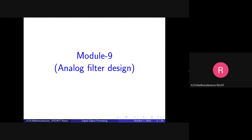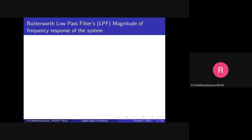Good morning. Today I am going to summarize analog filter design. Let us consider the Butterworth low-pass filter. The magnitude of the frequency response is |H(jω)|, where ω is in radians per second, ω = 2πf, and f is in Hz. The unknown parameters in this expression are capital Ωc and n, where n is the order of the filter and Ωc is the 3 dB cutoff frequency.